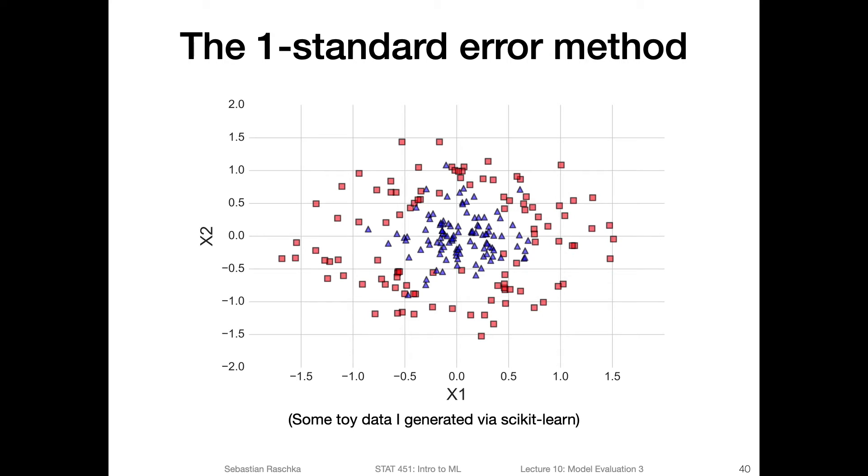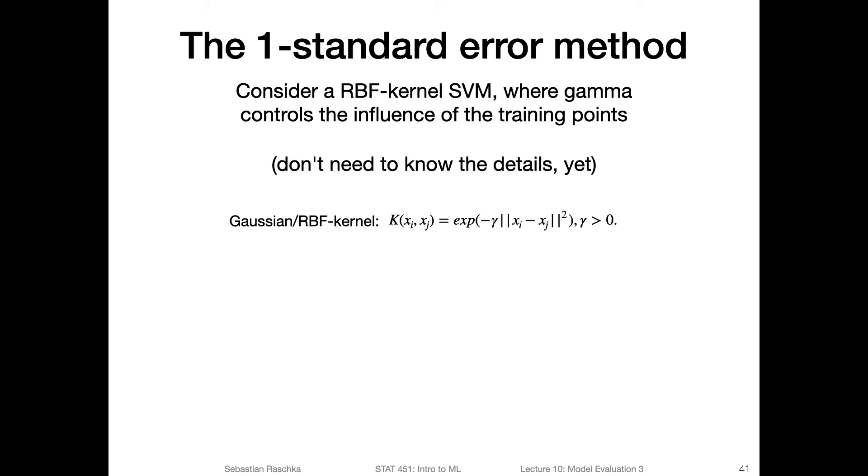Anyways, consider a dataset, some toy dataset I generated with scikit-learn, where we have two classes. That's a binary classification dataset. We have these squares here as class one and the triangles as class two. The task is to classify squares and triangles. We are going to consider an RBF kernel SVM. I realized we haven't talked about RBF kernel SVMs in this class, but it's just simpler to illustrate this method in the context of a kernel SVM because it's more obvious to show you what a simpler and a more complex model is. I could maybe also do this example with a k nearest neighbor method. Maybe we can observe something similar when we vary the number of k. That might be a good exercise to do at home, or maybe even homework.